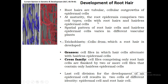In the epidermis we see two kinds of cells: hairless cells and cells with root hairs. The spatial pattern of root hair cells and hairless epidermal cells varies in different vascular plants — how they are distributed in the epidermis of a root will vary from plant to plant. Another important term we need to know is trichoblast.